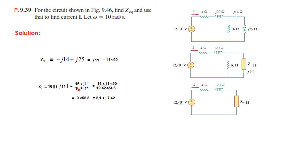If you have difficulty converting from rectangular to polar, I recommend watching my video where I show how to use a calculator for both conversions. Dividing: 16 times 11 divided by 19.42 gives magnitude 9, and the angle becomes 90 minus negative 34.5, which gives angle 55.5 degrees.